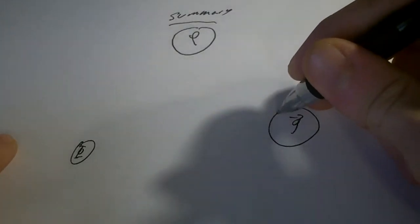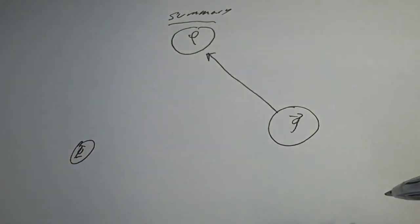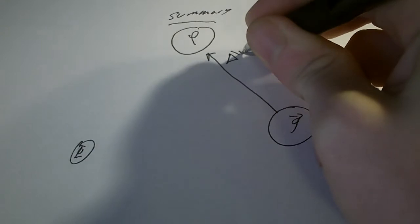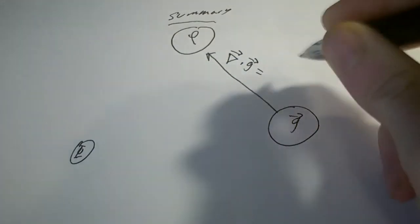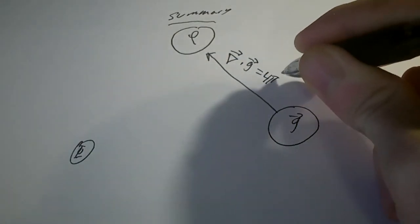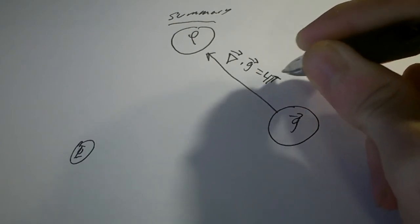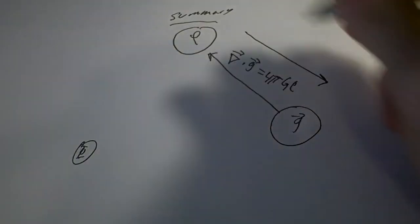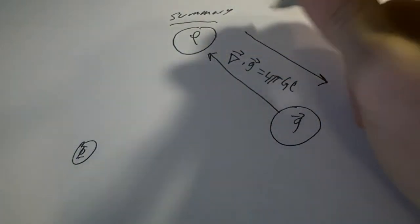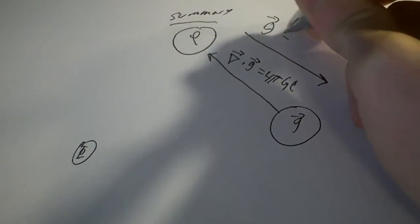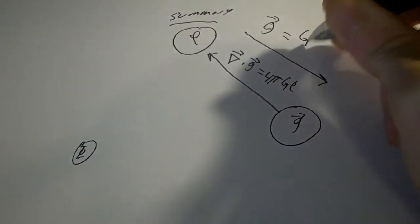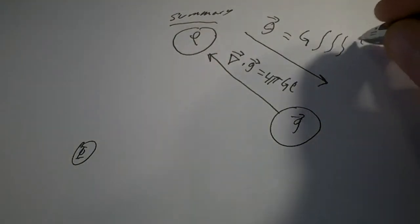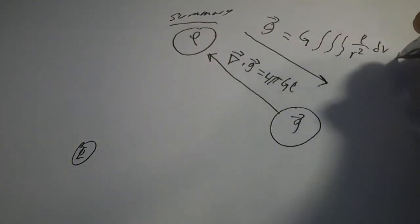How do we get from g to rho? This is Gauss's law: div g equals 4 pi G rho. How do we get from rho to g? Well, g is the capital G times the volume integral of rho over r squared dV, r-hat.